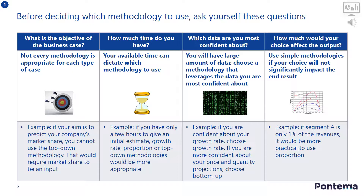If you have more time, then the bottom-up approach would likely give you a more accurate answer. Thirdly, you will likely have a large amount of data at your disposal, but which data sets give you the most confidence? If you are confident about your growth rate, choose the growth rate approach. If you are more confident about your price and quantity projections, then choose the bottom-up approach. And fourthly, how much would your choice affect the output? If your choice will not significantly impact the end result, then it is best to use simple methodologies like the proportion approach. For example, if a segment you are forecasting contributes only one percent of the revenues, it would be more practical to use the proportion approach.